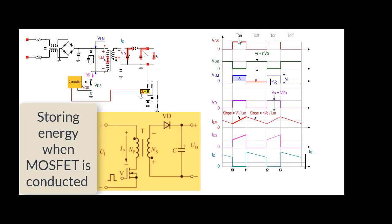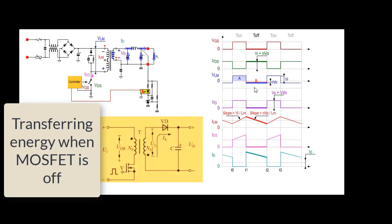During the positive half cycle of the PWM signal VGS in CCM mode, the MOSFET is conducted and current passes through the primary side to store energy in the primary winding. At this point, the output voltage of the secondary winding is negative at the upper end and positive at the lower end in terms of polarity, so that the diode is cut off and has no output. During the negative half cycle, the MOSFET is cut off and no current passes through the primary side.